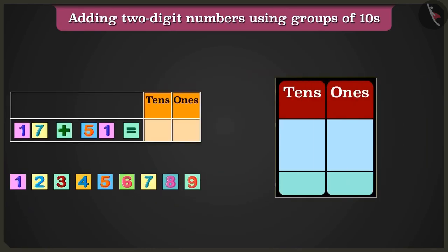You can add these numbers by writing them in the table of ones and tens. Here, for 17, in the box of tens, write 7 and in the box of ones, write 1.